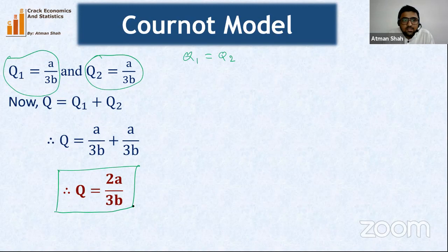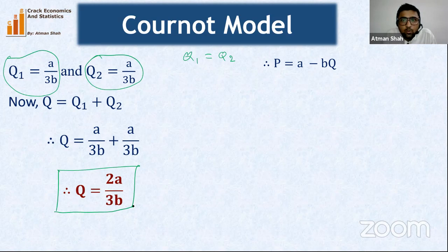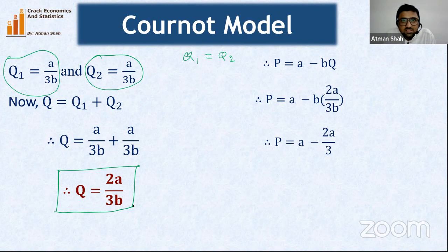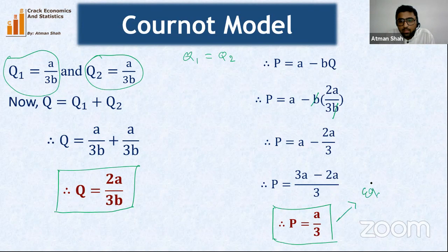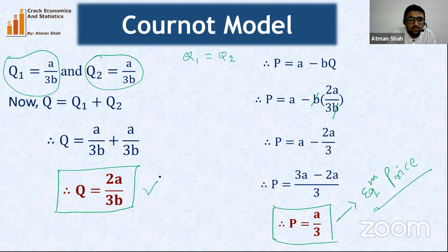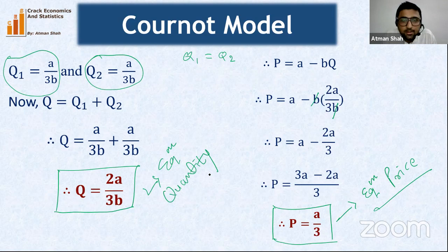Total output in the Cournot model is Q = 2a/3b. Substituting into the demand equation P = a − bQ: P = a − b·(2a/3b) = a − 2a/3 = a/3. So the equilibrium price in the Cournot model is P = a/3, and equilibrium quantity is Q = 2a/3b.